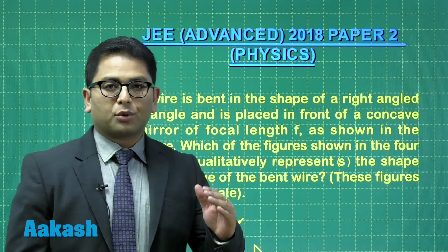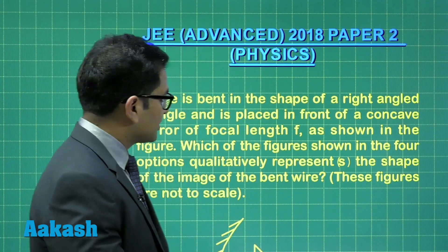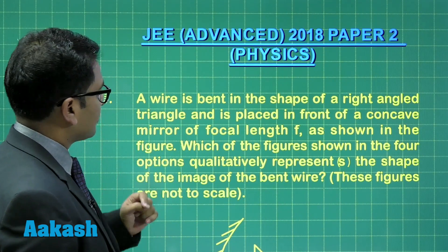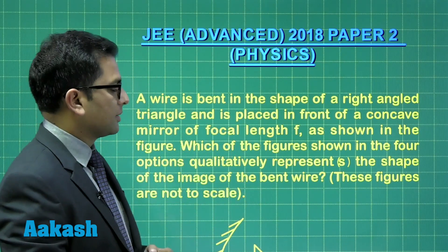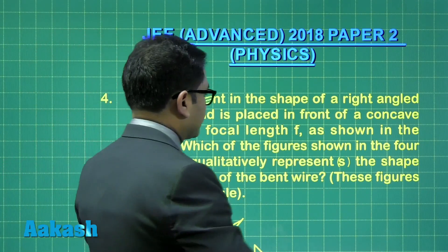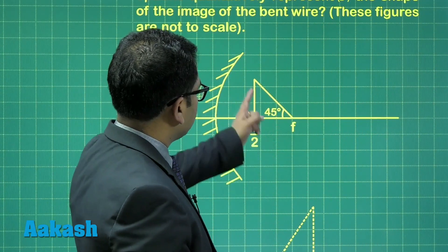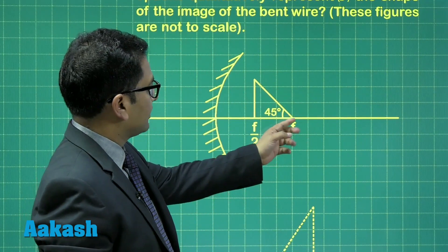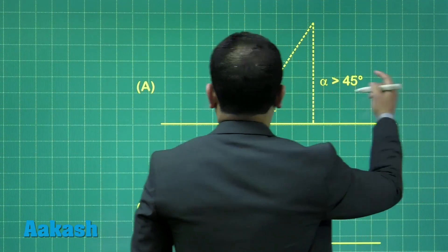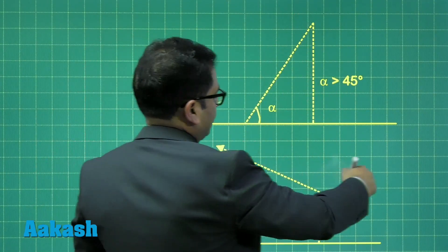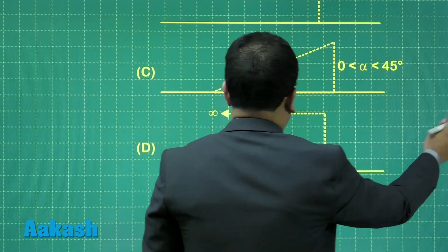Now question number four, taken from ray optics. This is a short but very tricky question that may challenge your thought process. A wire is bent in the shape of a right-angle triangle and placed in front of a concave mirror of focal length f. One end is at the focus, the other is at f/2. We need to choose which of the four figures qualitatively represents the shape of the image of the bent wire.